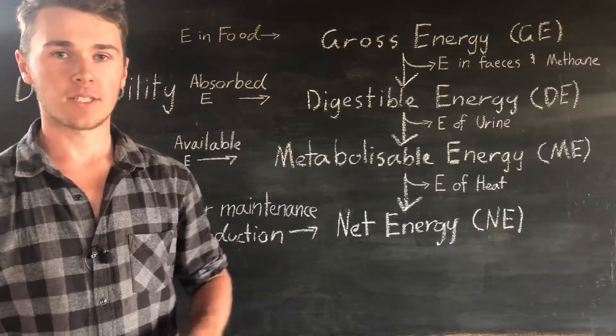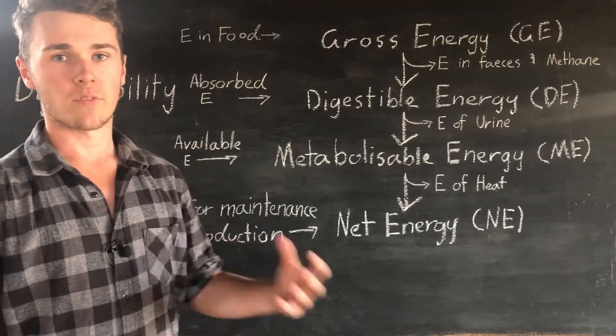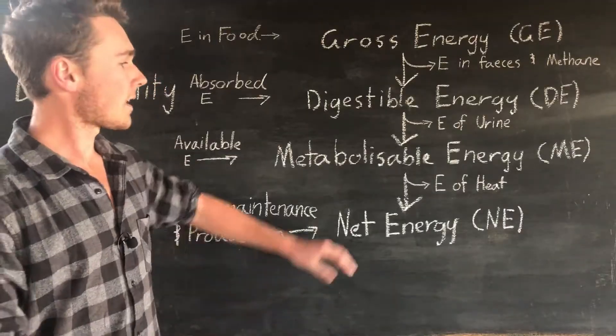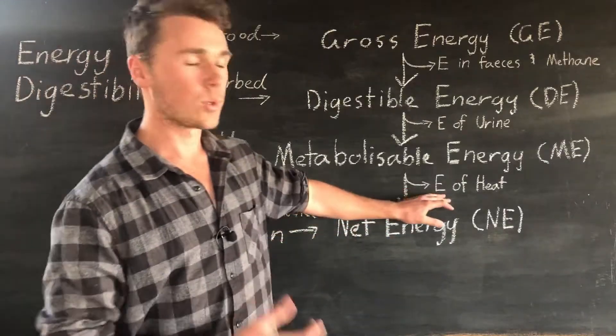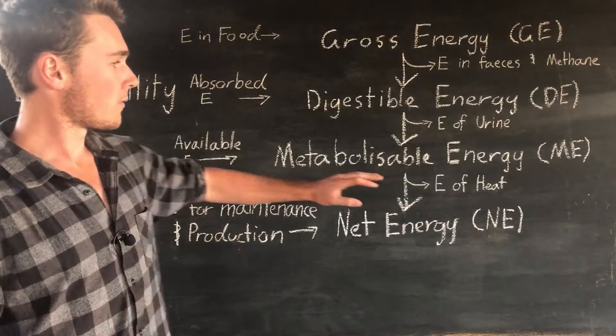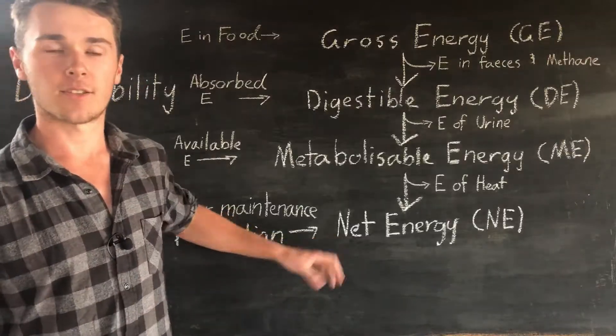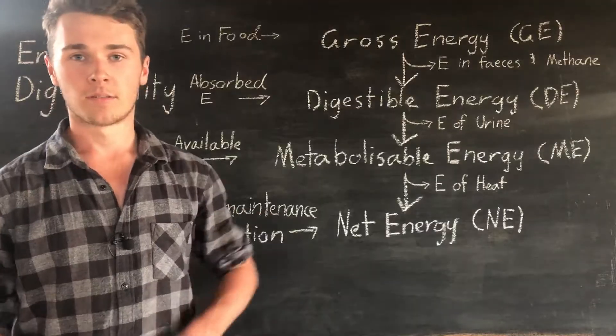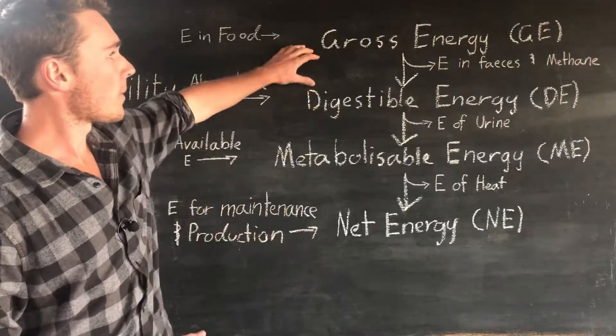So what metabolizable energy is, is the amount of energy that is produced from metabolic reactions. Now, there's only one problem with metabolic reactions: they produce heat, and heat is a form of energy, and so heat is removed and it's a loss to the system. So once we remove the energy of heat from our metabolizable energy, we get left with our net energy. So this is the energy that the animals can actually use for production, maintenance, and growth. So we want as much net energy that we can get from our gross energy.